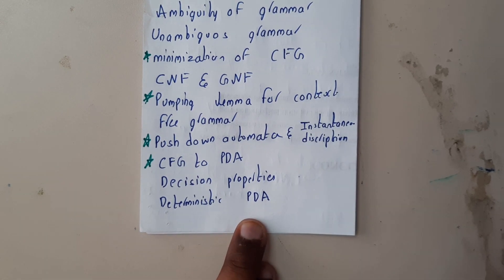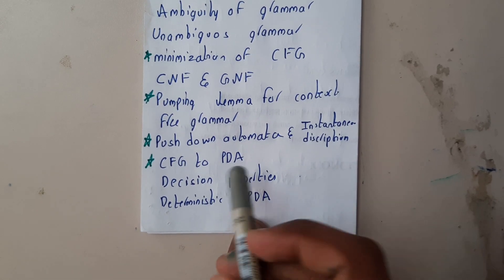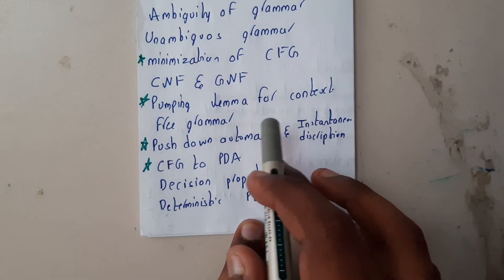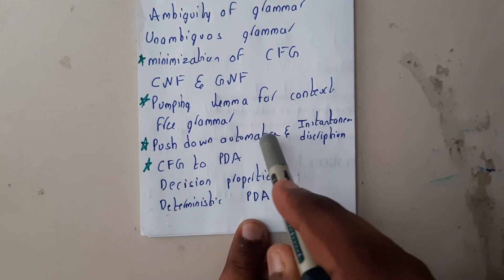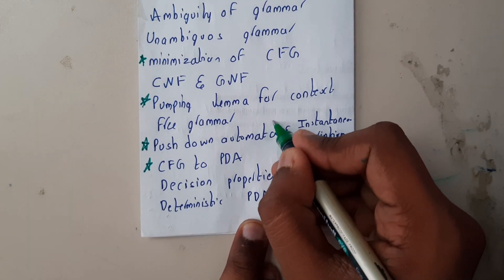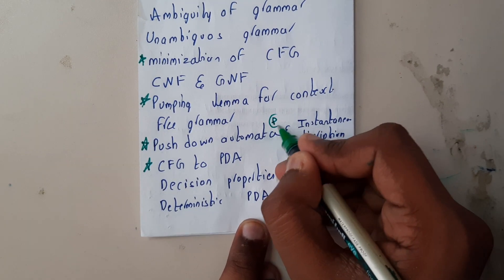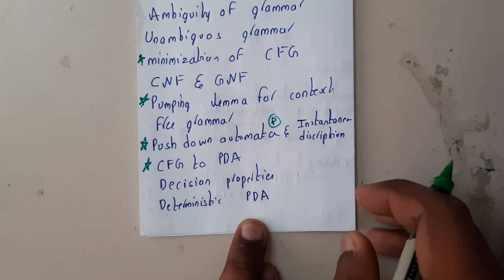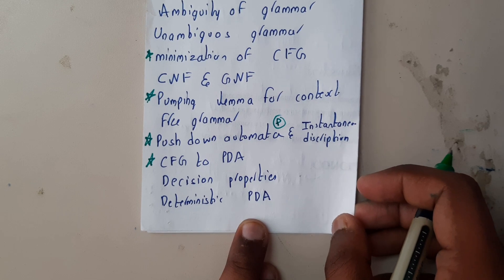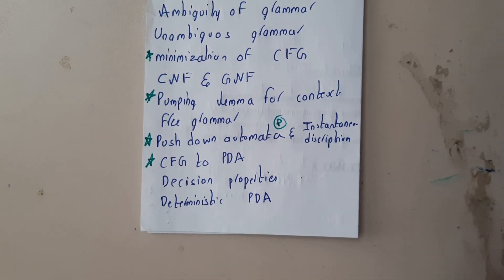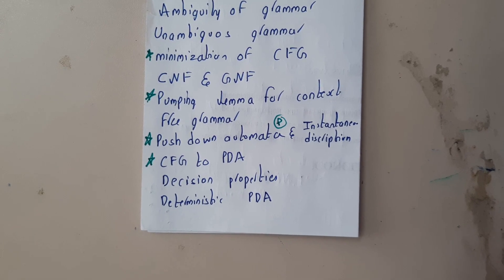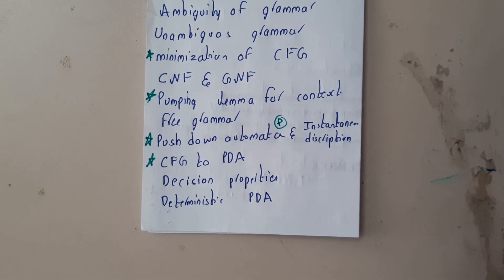Pushdown automata — there will be a compulsory question in pushdown automata, basically a problem. CFG to PDA conversion will be the topic. I hope everyone got a small idea on this. In the next tutorial we'll be starting the fourth unit of this subject, that is Turing Machines. Thank you, thanks for watching.